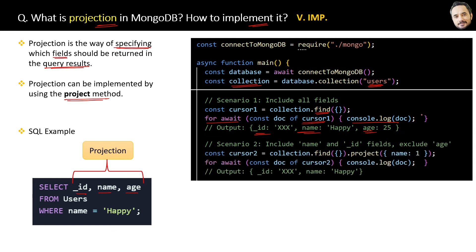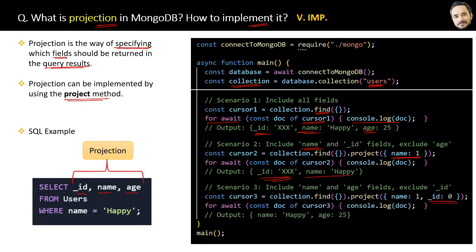Now in the second scenario, suppose we want only the name field. Then we put the value 1 for the field name in the projection, and in the output we will receive id and name only — age will not be there. And id will always be there by default. The third scenario: if you do not want id, put value 0 in front of the id field to exclude it. As a result, id will not be there in the result. These are the three different scenarios of using projection.